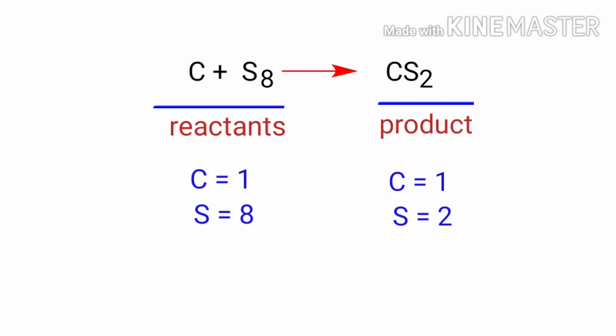In this equation, we need to balance the sulfur atoms. To do this, we need to put a coefficient of 4 in front of CS2.